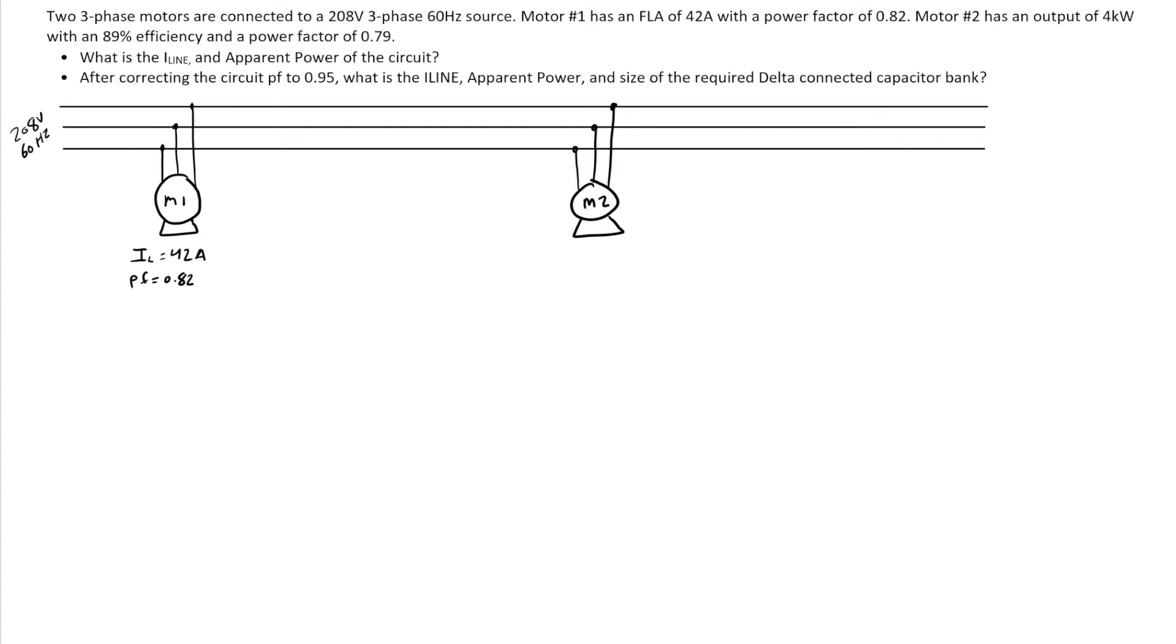And motor two has an output of 4,000 watts, so it's a 4,000-watt motor, 89% efficient, and a power factor of 0.79.